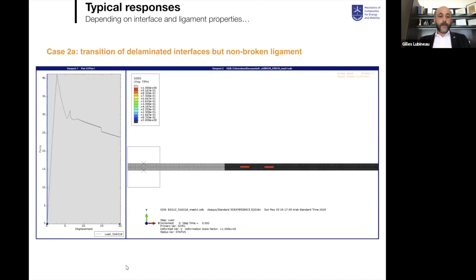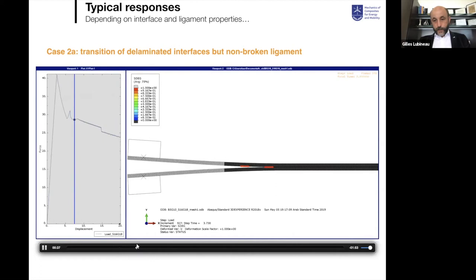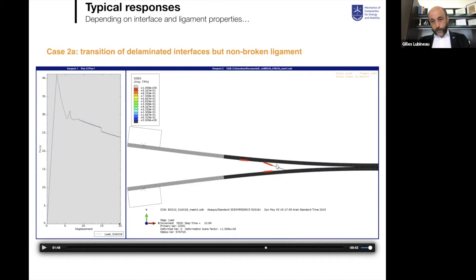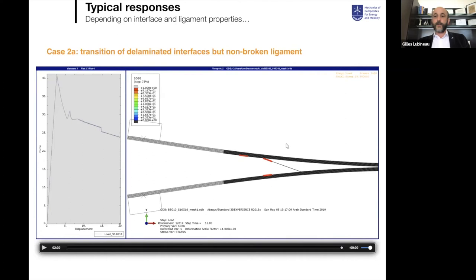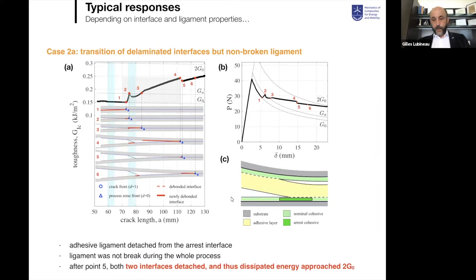What is interesting is that by modifying the relative values between dark green and light green areas, you can completely change the system. The crack propagating at the bottom interface reaches the crack arrestor, triggering development of a secondary crack — a bifurcation to the top interface — and creation of a ligament between the bottom and top interfaces. Your DCB curve then shows a large improvement because substantial energy is stored in this adhesive ligament.